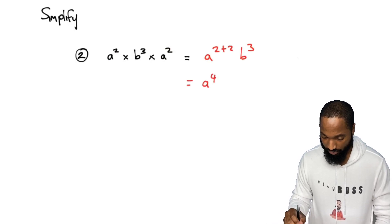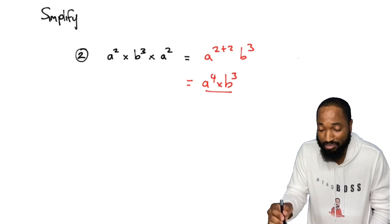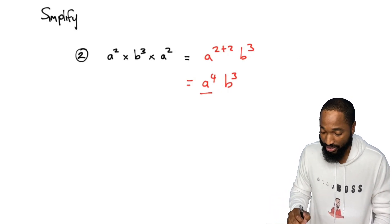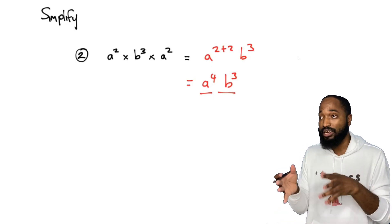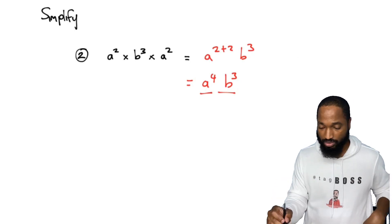So this is going to add up, two plus two, and just leave the b alone. So this is a to the power of four b cubed. Notice I didn't have to put any multiply sign, I could just leave that because in algebra when you see letters standing up next to each other, it means multiply them.